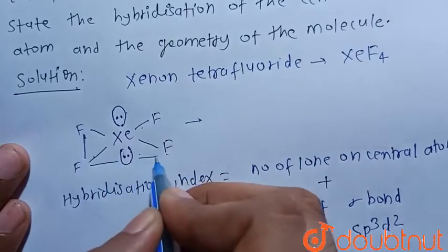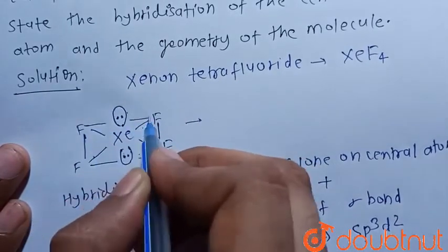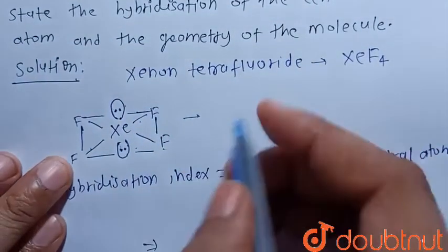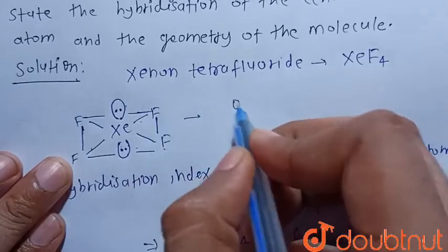When the hybridization is sp3d2 and compound has four bond pairs and two lone pairs, its geometry is octahedral.